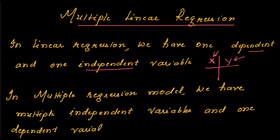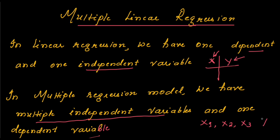In multiple regression, we have multiple independent variables and one dependent variable. So in the data set, if you are having multiple independent variables — not just x, you will have x1, x2, x3 — and of course there will be one dependent variable. Since there are multiple independent variables, the resulting equation will also be called the multiple linear regression model.